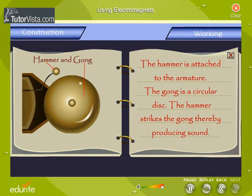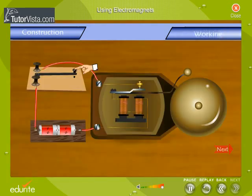The hammer is attached to the armature. The gong is a circular disc. The hammer strikes the gong thereby producing a sound. The working of the electric bell is based on the electromagnet.